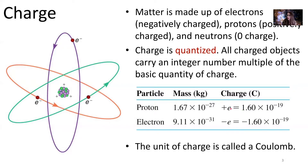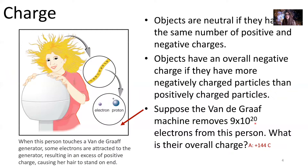So one proton has a positive charge of that quantity, and one electron has a negative charge of that quantity. Objects are neutral if they have the same number of positive and negative charges. Objects have an overall negative charge if they have more negatively charged particles than positively charged particles. Objects have an overall positive charge if they have more positively charged particles than negatively charged particles.